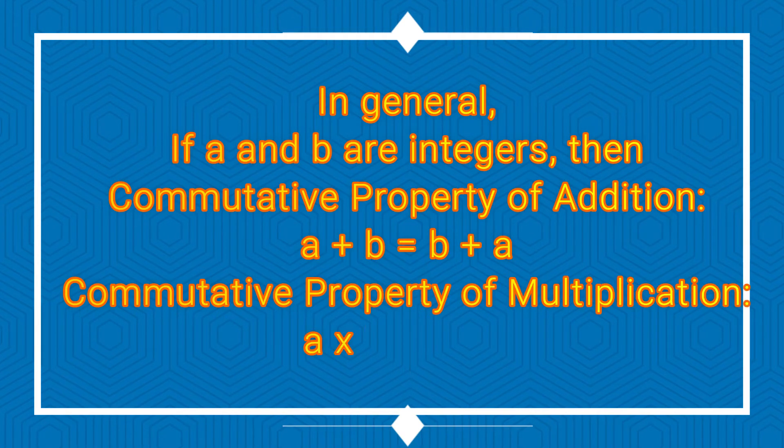So, in general, if a and b are integers, then commutative property of addition is a plus b equals b plus a. Similarly, in commutative property of multiplication, a times b is equal to b times a.